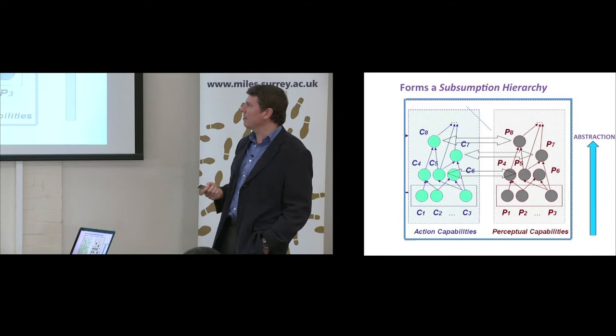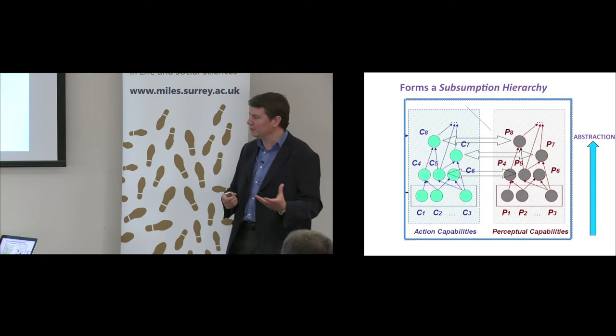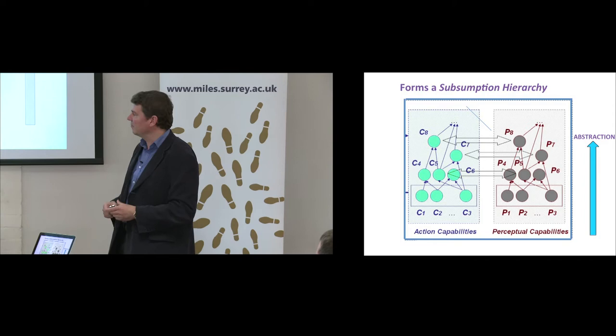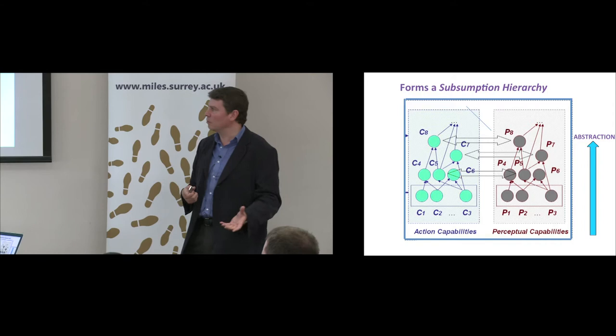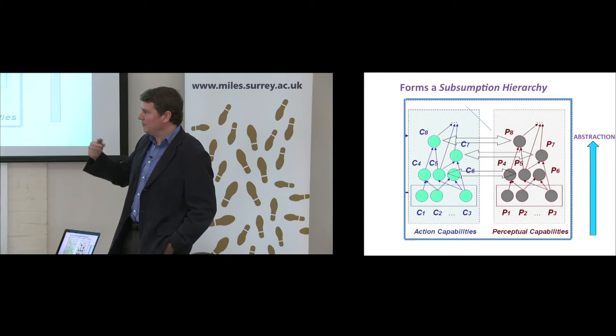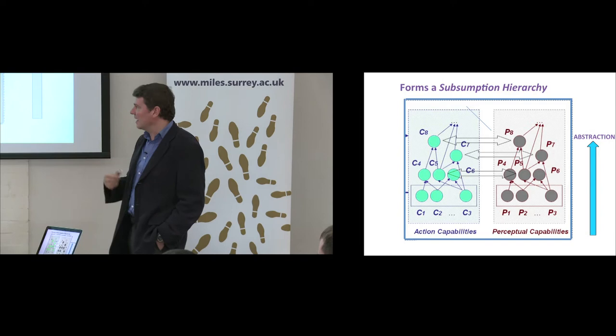You can actually build those more compact representations on top of each other. For instance, once you've built the concept of object with its corresponding perceptual space — the actions you can associate with objects correlate with the perception of objects — you might, after further experimentation, discover that some objects are containers you can put one inside another. So basically there is a subsumption hierarchy of possibilities, and for every higher-level perception there is a corresponding set of actions.